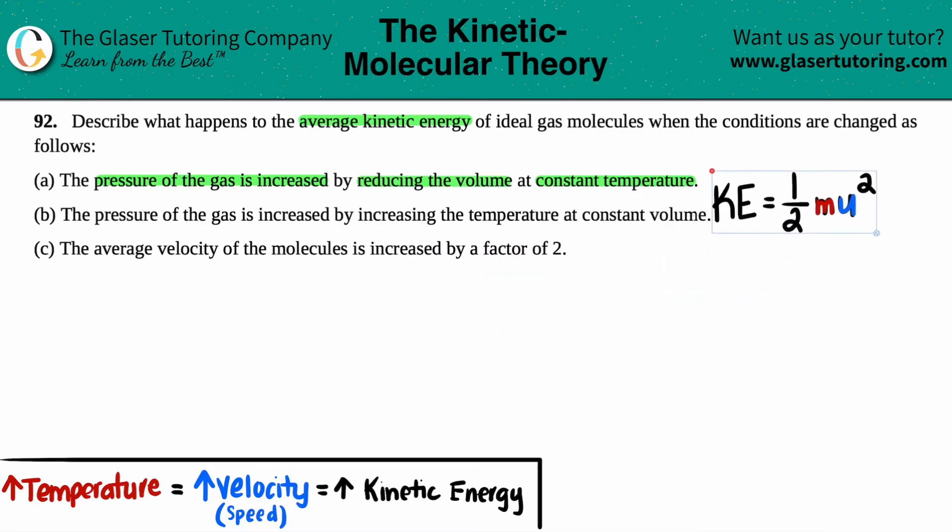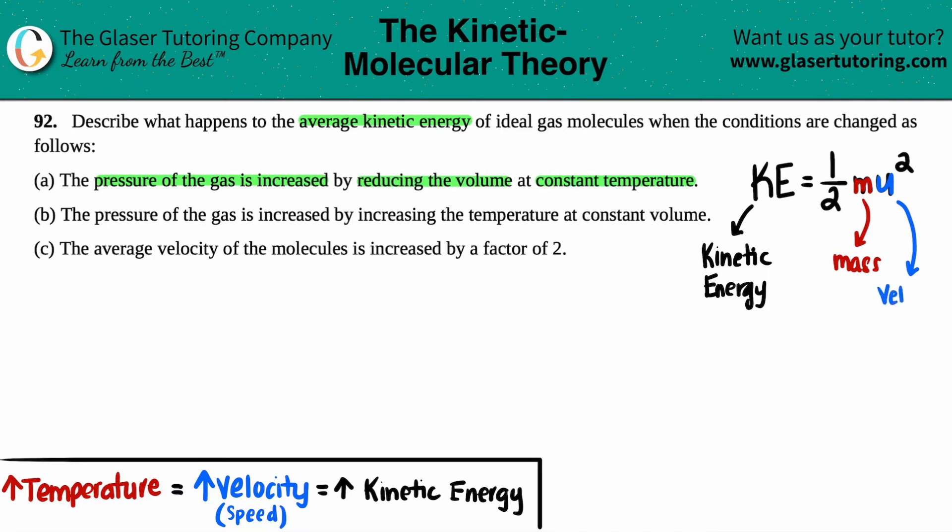So maybe I'll just put this over here. Kinetic energy, which is KE. So this is kinetic energy, the amount of energy of movement. And remember, gases are constantly moving nonstop. So they have a bunch of kinetic energy. Kinetic energy equals one half times M, which is the mass of the gas. And then this U. I don't know why they use U in chemistry. Usually it's a V. But this would be the velocity.